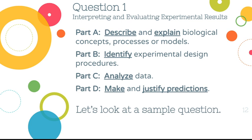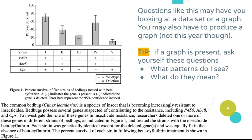We're going to look at a sample question from the 2018 exam, question four. First, look at the graph — it has error bars — and a chart below that shows different strains and which genes are present or absent. The first sentence tells me it's about bed bugs, and the caption says it shows percent survival of five strains treated with beta-cyfluthrin.